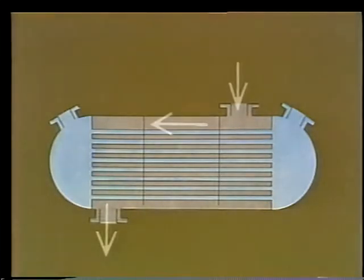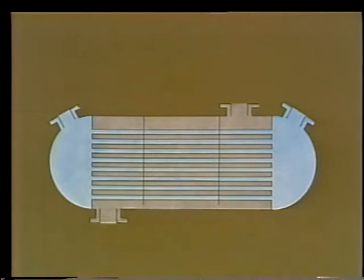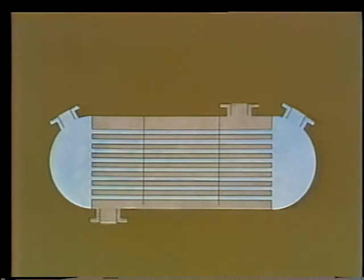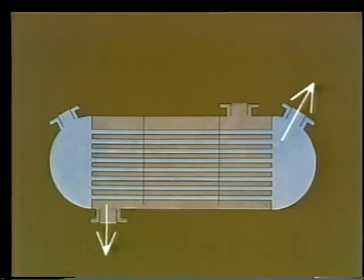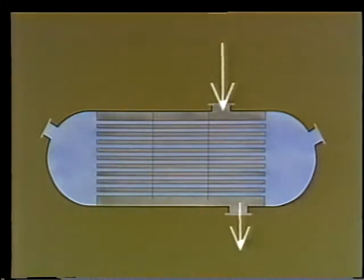Parallel flow means the fluid to be heated or cooled is flowing in the same direction as the cooling or heating fluid. In the counter flow type, they pass in opposite directions. The counter flow arrangement is more efficient because the temperature out of the cold fluid can actually be higher than the exiting temperature of the hot fluid, since a higher temperature difference is maintained all the way through. Cross flow is where the shell side fluid passes crossways over the tube bundle. Most condensers are cross flow.